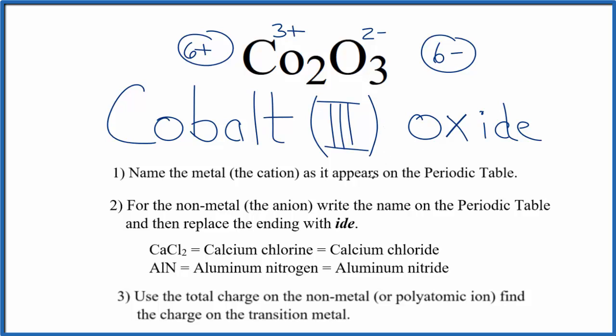If you were given this name and asked to write the formula here, you'd know that the cobalt would be 3 plus, because the Roman numeral in the name tells us that it's 3 plus. This is Dr. V with the name for CO2O3, cobalt (III) oxide.